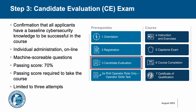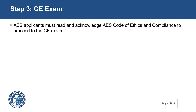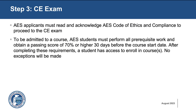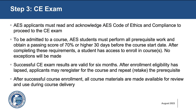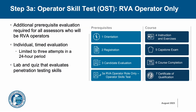The CE is a mandatory step and is applicable to every AES assessor role. Before taking the CE exam, you must read and acknowledge the AES Code of Ethics and Compliance. After you pass the CE, your results are valid for six months. If you want to become an AES operator, before you take the CE exam, you must pass the Operator Skills Test, or OST exam, which evaluates your penetration testing skills. The OST is mandatory for all AES operators.